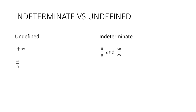So again, the difference between the two is that undefined expressions are always represented as positive or negative infinity, meaning the limit does not exist. Indeterminate forms, however, can be existent or non-existent depending on the given — they can be any real number, or they can be positive or negative infinity, again depending on the given rational expression.